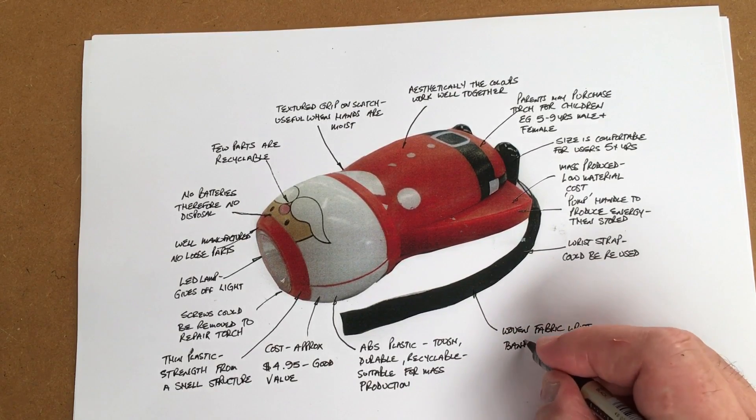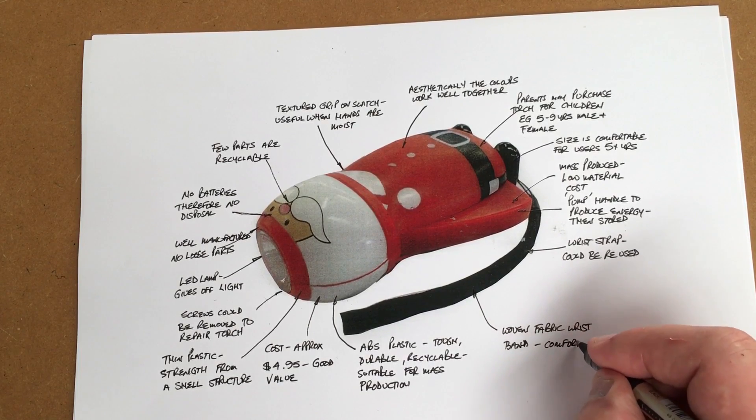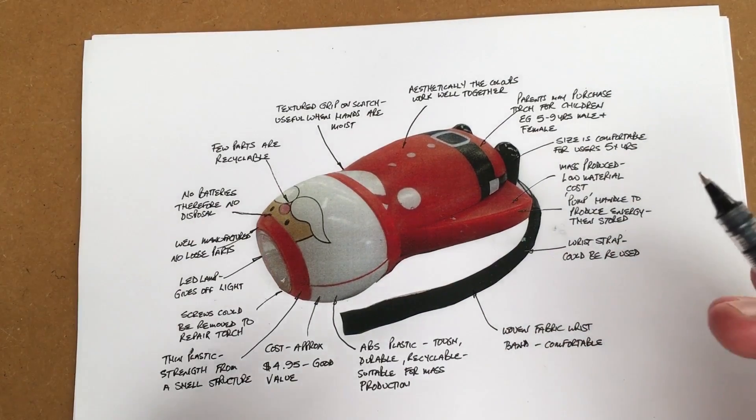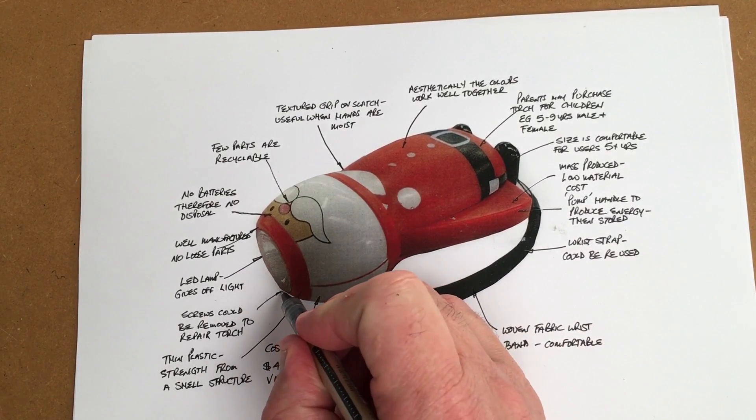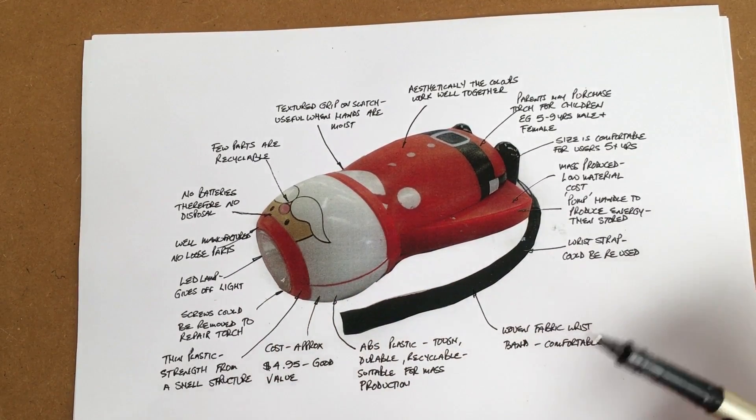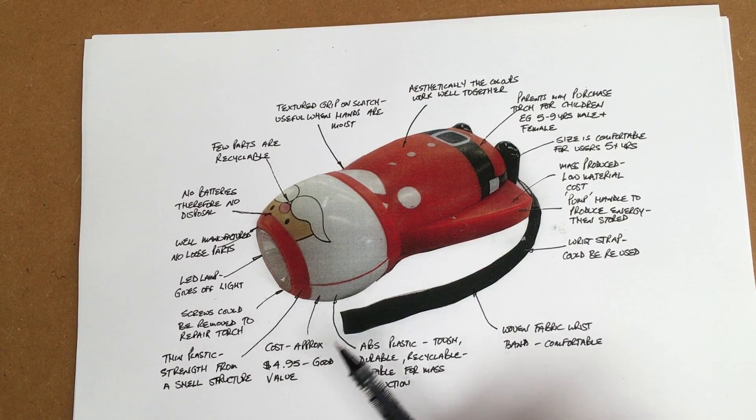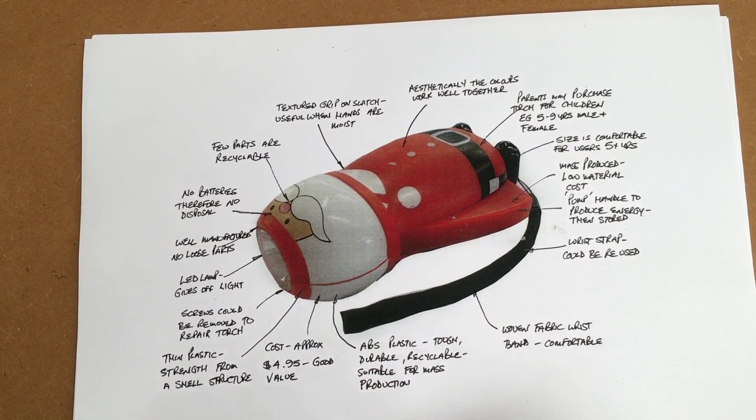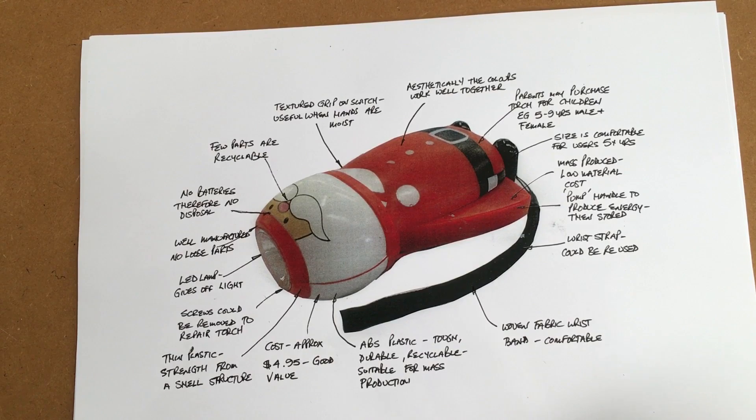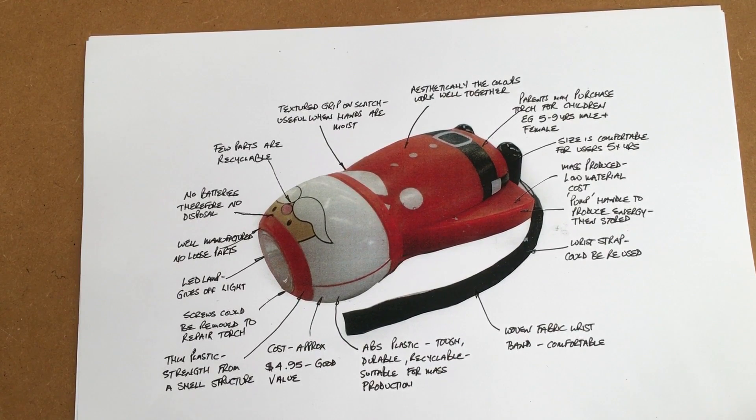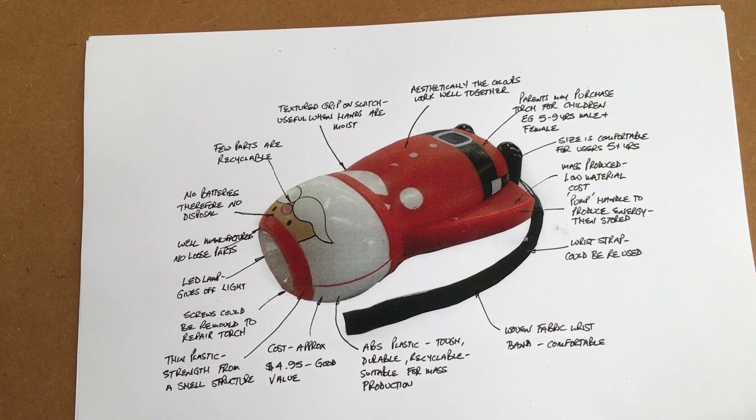What I've done there is I've added quite a lot of annotations. I've come up with factual, intuitive information that I've researched myself or got my peers to assist me. Maybe gone on the internet to find out information about ABS or gone on the net to look at what these products cost or how they're manufactured. So ACCESS FM: Aesthetics, Cost, Customer, Environment, Size, Safety, Function, Material. That is another method using a mnemonic acronym that you could use to analyze any product. Good luck with this.